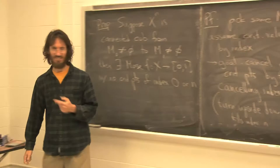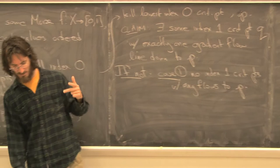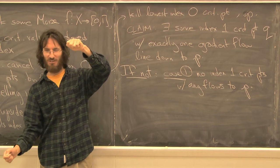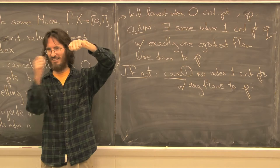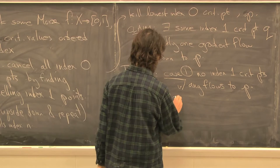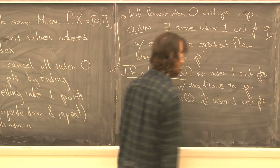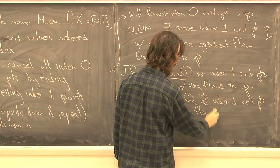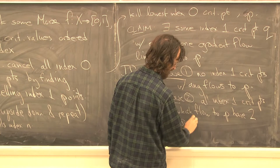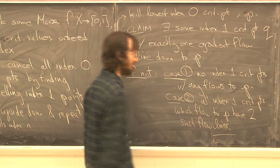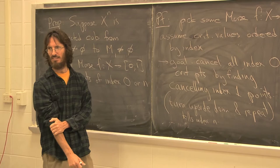Case 1: no index-1 critical points with any flow lines down to p. Case 2: all index-1 critical points which flow out of two central points. We claim that in both cases, the manifold has to be disconnected. Here's the picture: index p is a minimum, so when you rise just above p, p creates a new component. So f-inverse of [0, f(p)+epsilon] is disconnected.